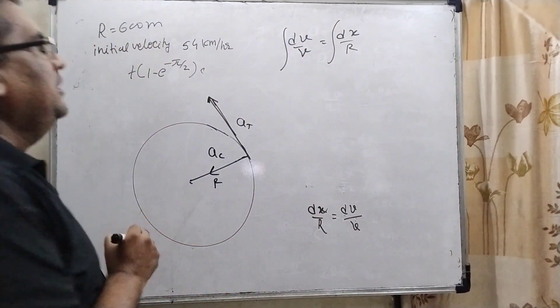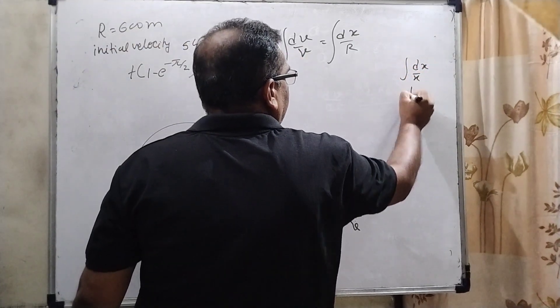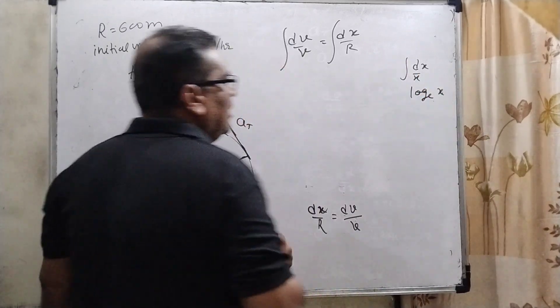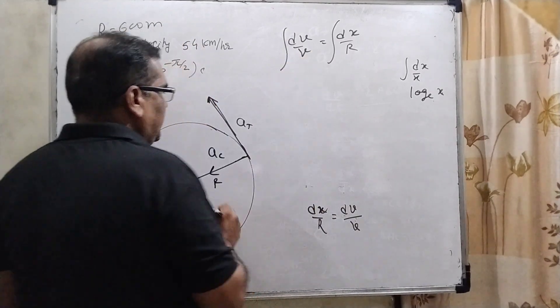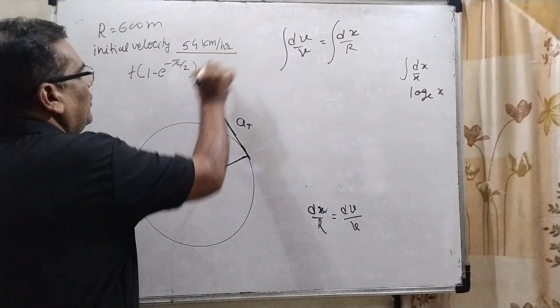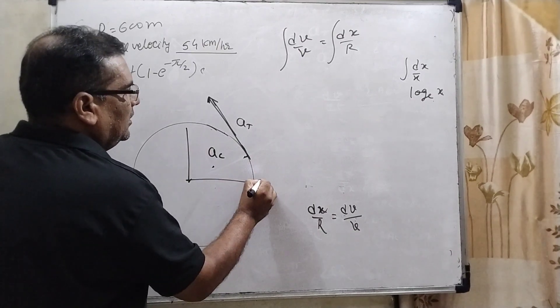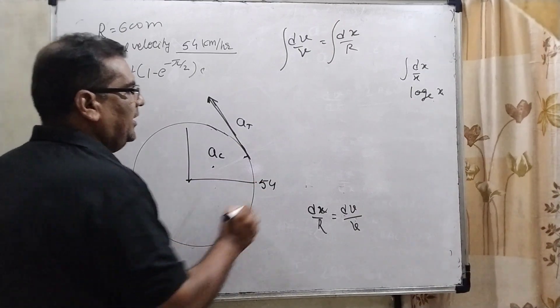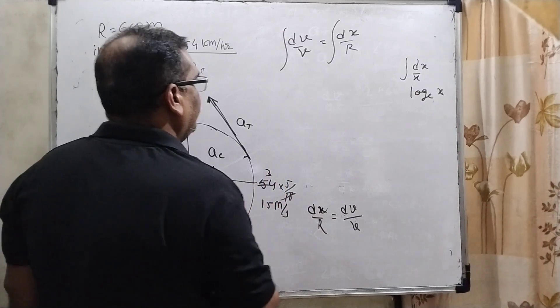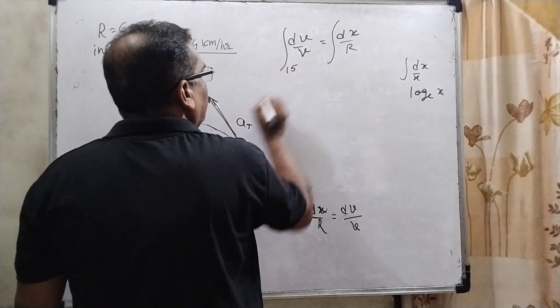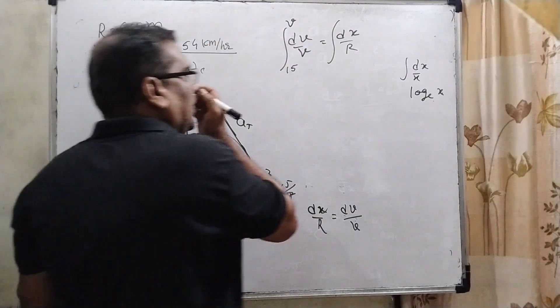Applying integration. As we know, integration of dx/x can be written as ln x. And what is the limit? Initial velocity is given as 54 km per hour. Converting to meter per second by multiplying by 5/18, we get 15 meter per second. So initial velocity is 15 m/s and final velocity is v.